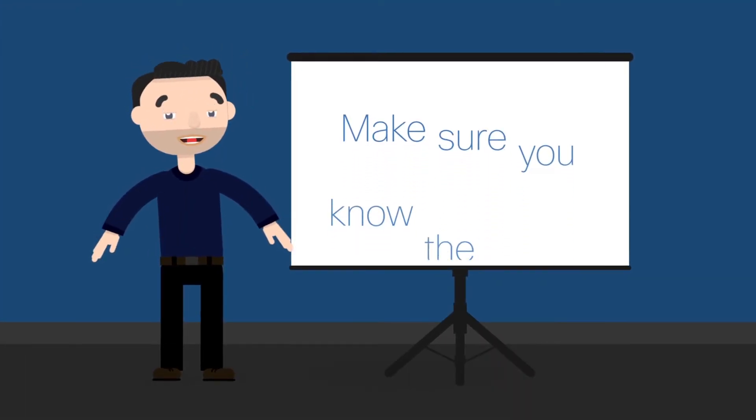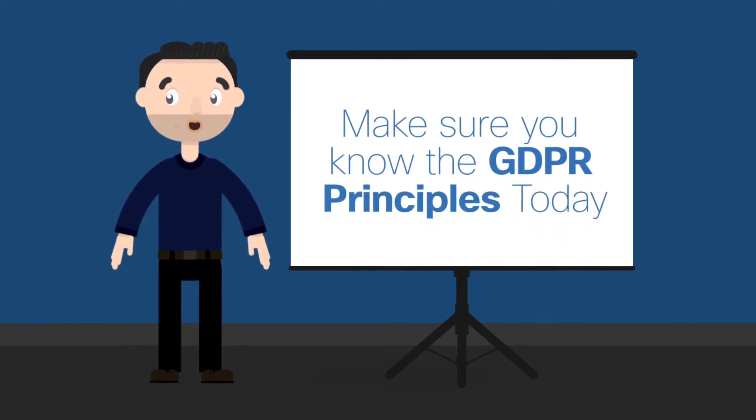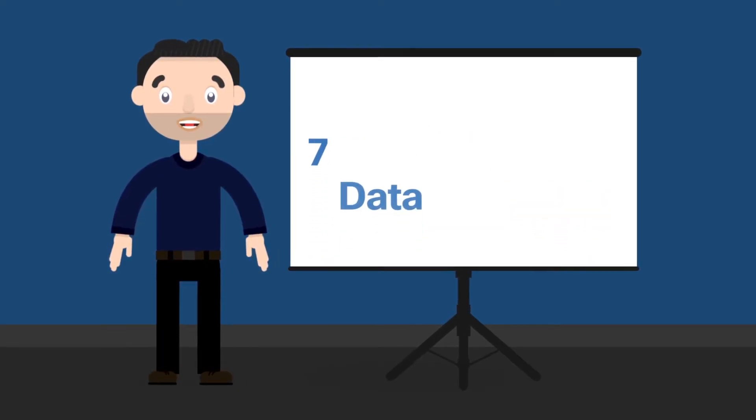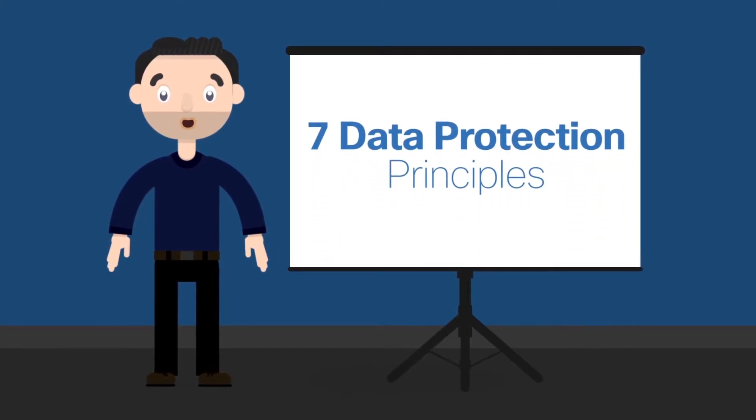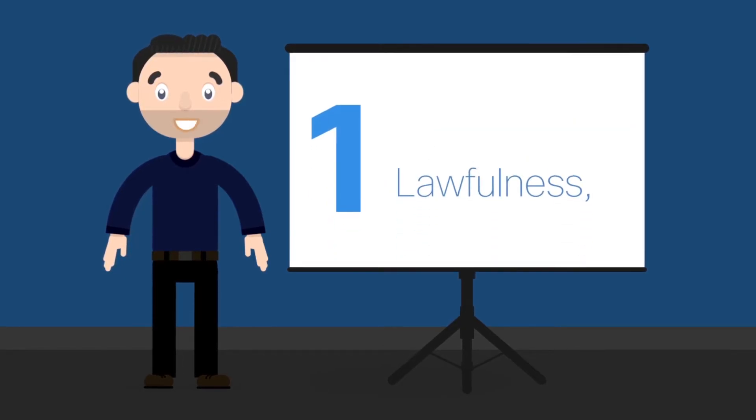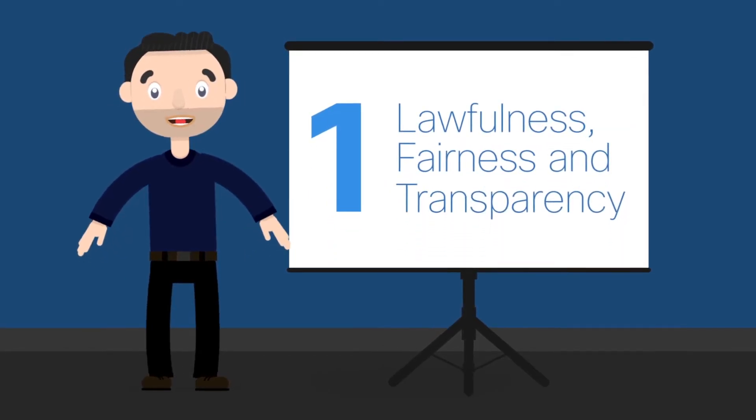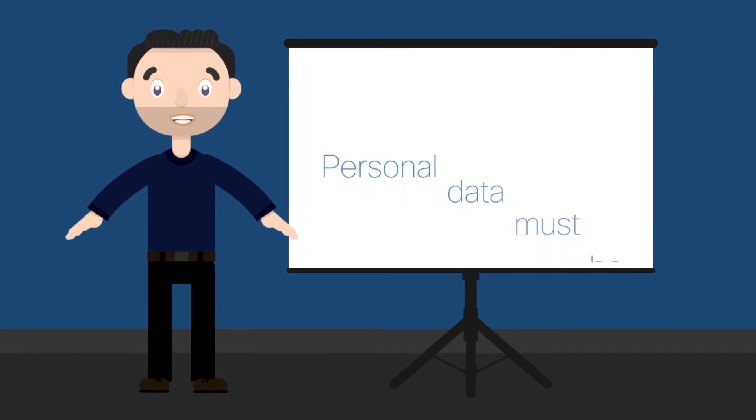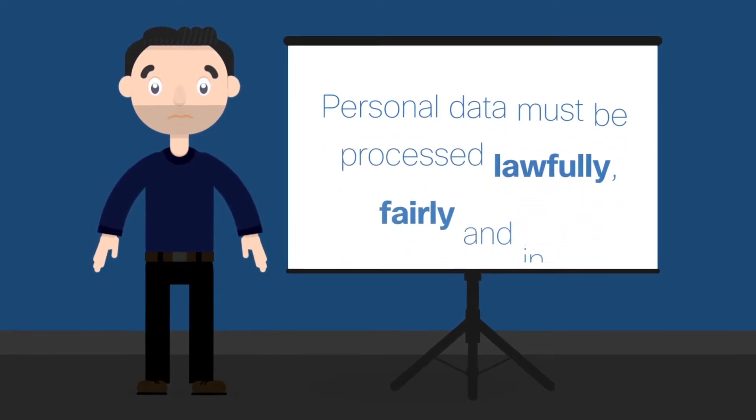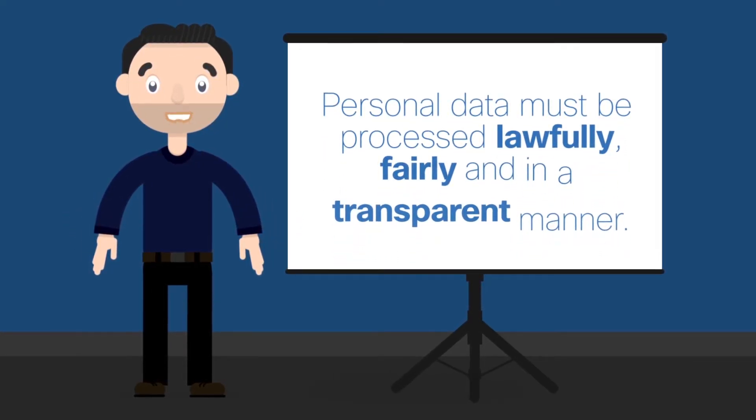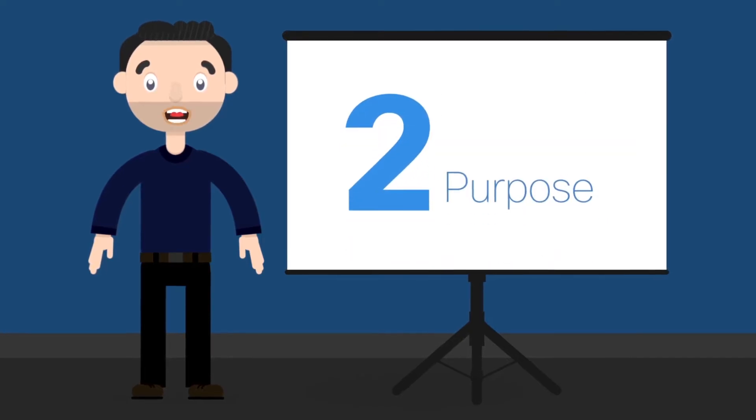Make sure you know the GDPR principles. Today there are seven data protection principles you need to be aware of. Lawfulness, fairness, and transparency: this means any personal data must be processed lawfully, fairly, and in a transparent manner.